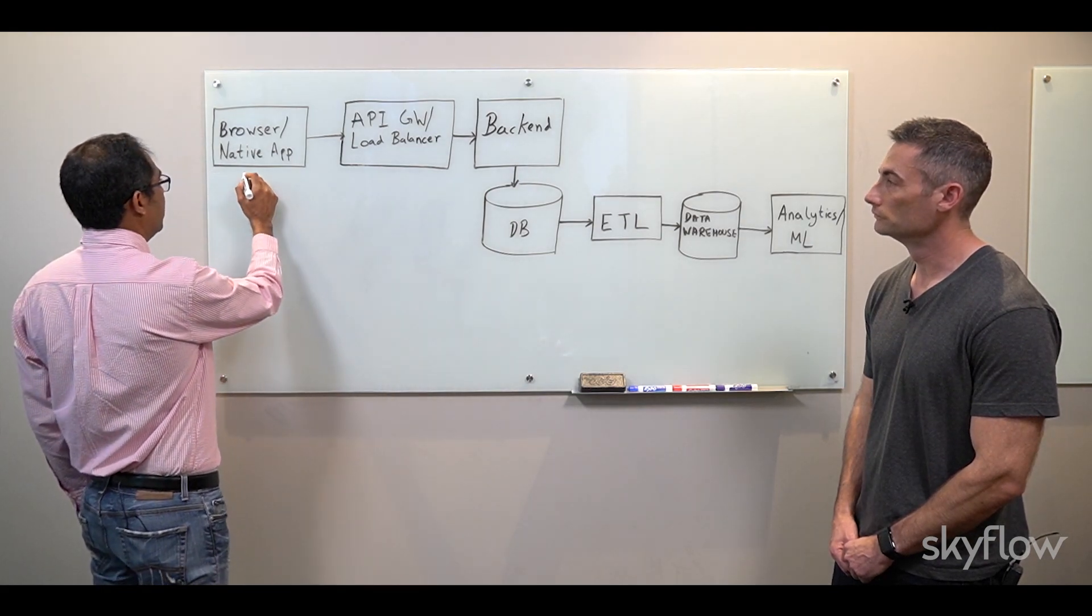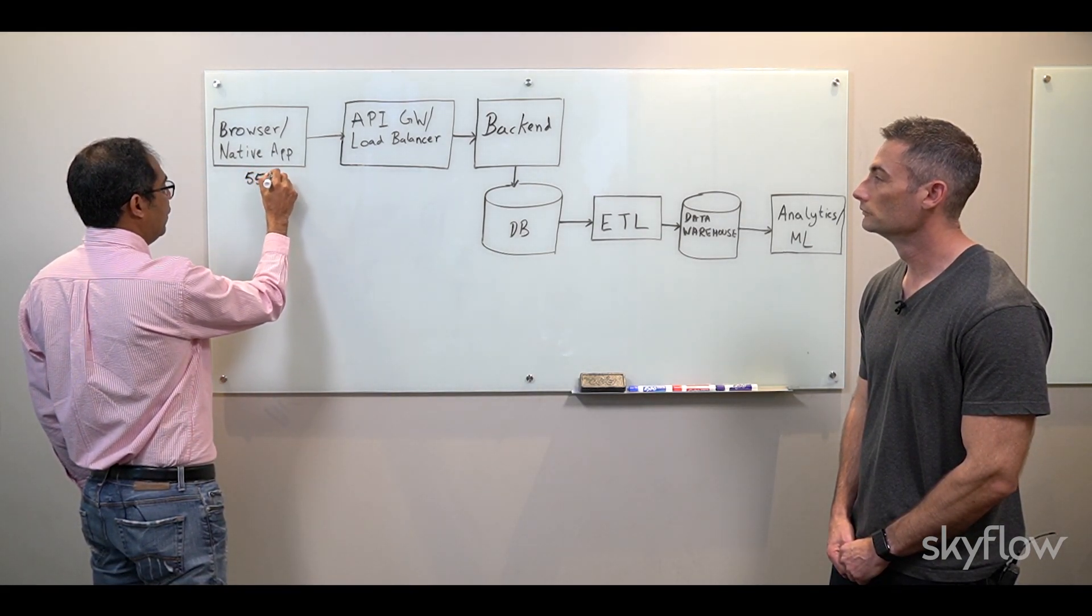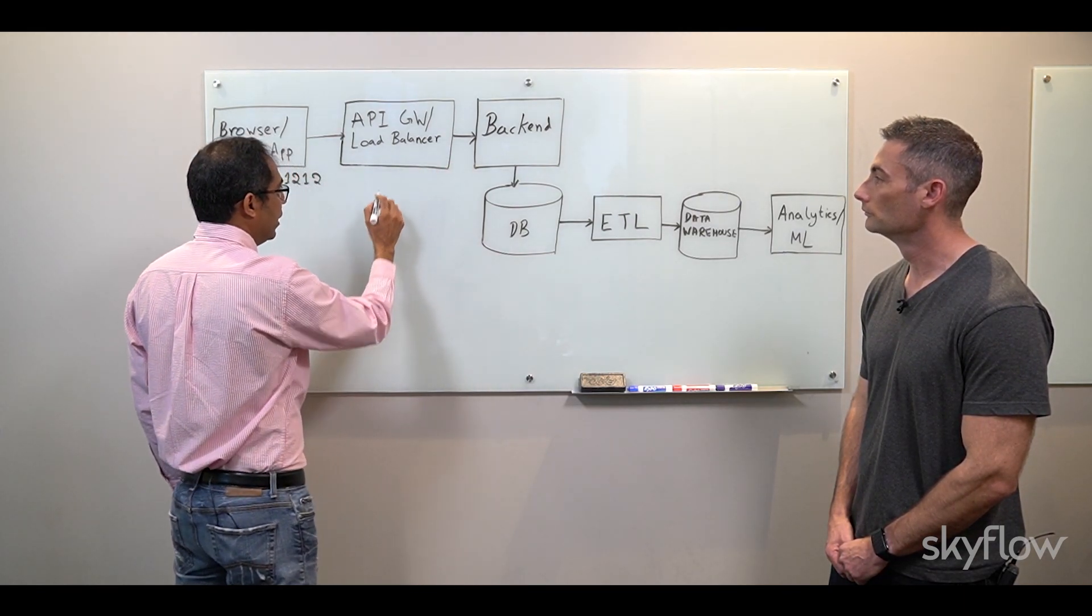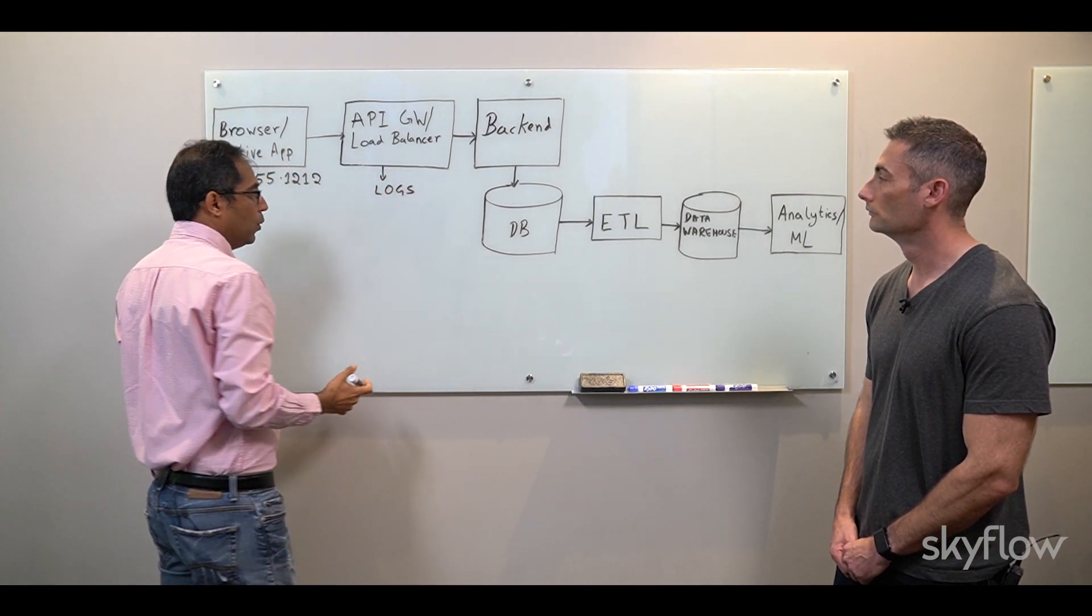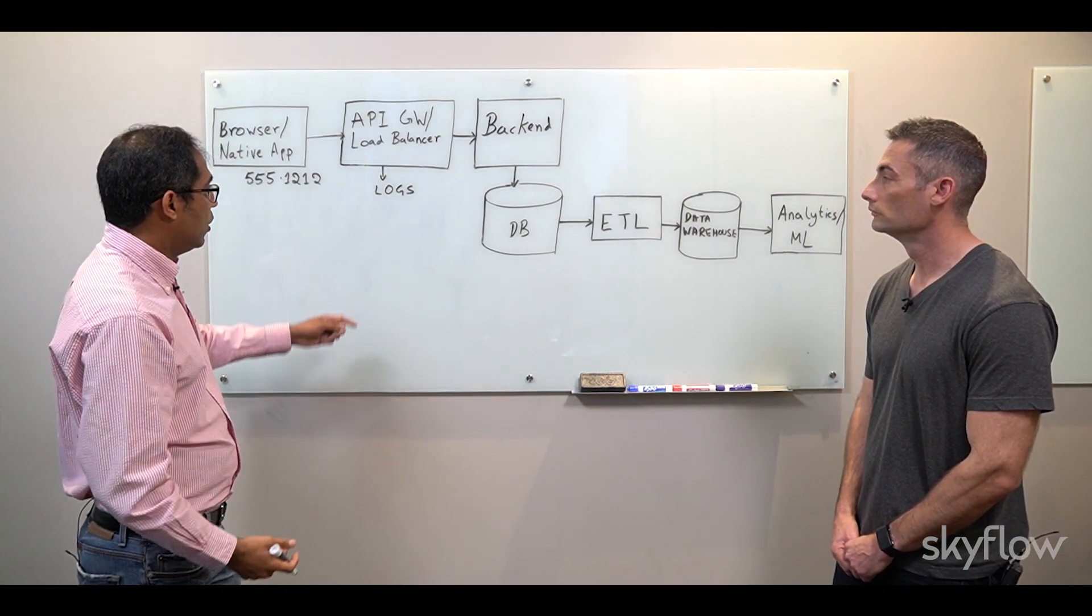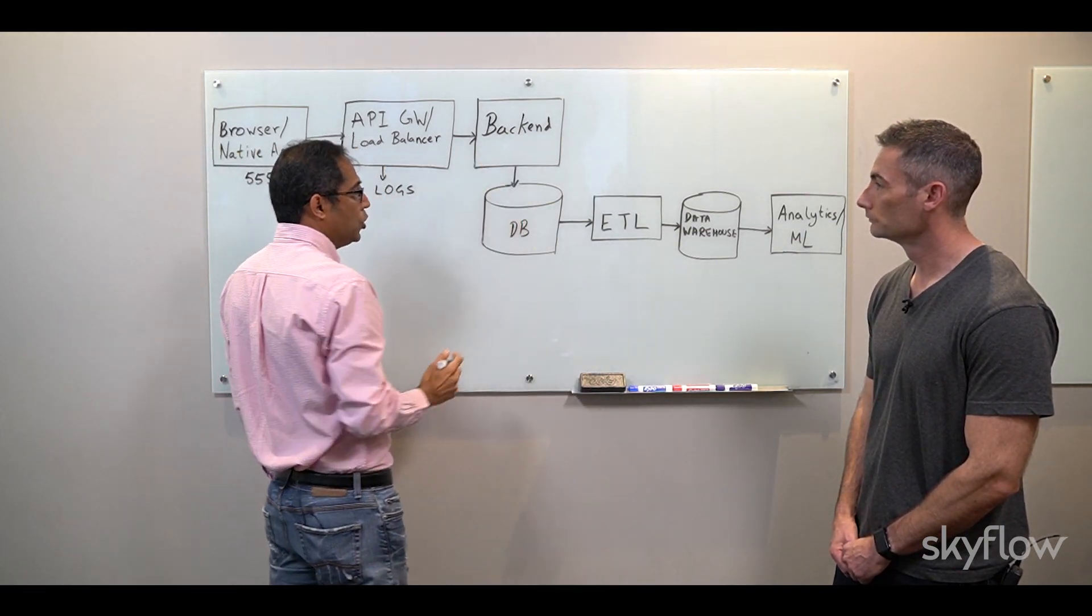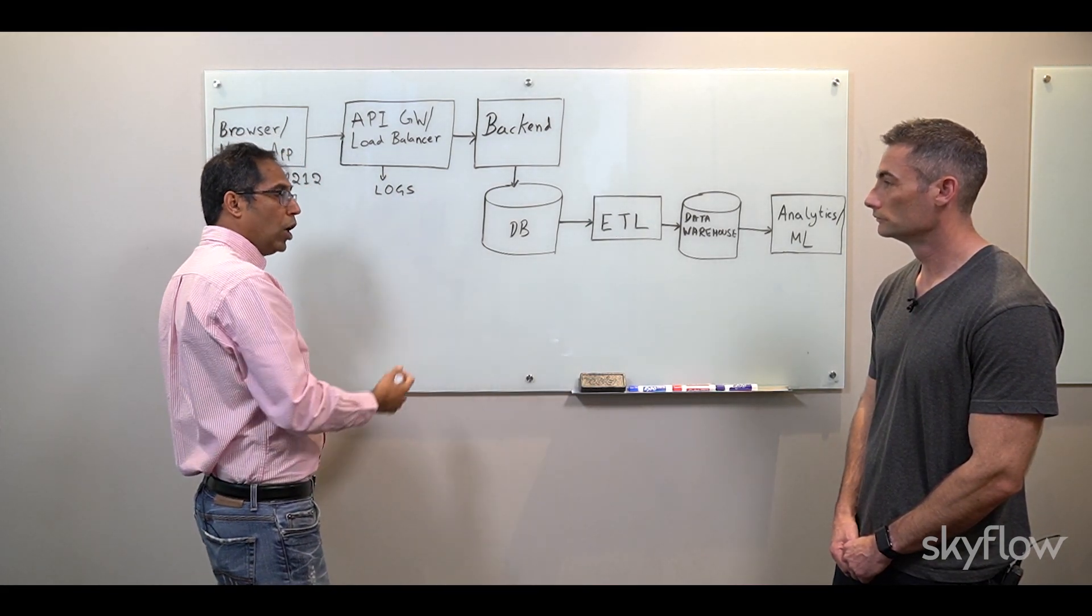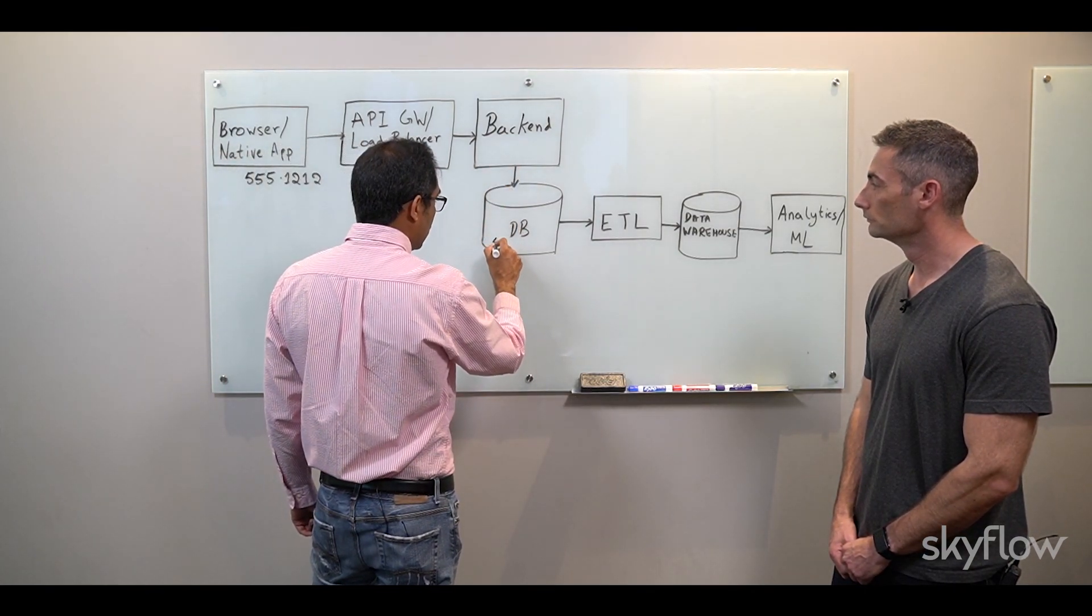So let's say we are collecting some sensitive information like a phone number from the user. If we collect it from the front end and send it to your backend via middleware, often middleware will end up writing logs which accidentally or sometimes by design end up writing that information in the logs. Now the information goes to your backend which has to process them. So it's in memory, it's in probably temporary storage somewhere, also in logs that your backend generates.